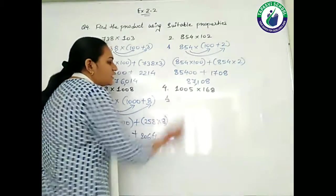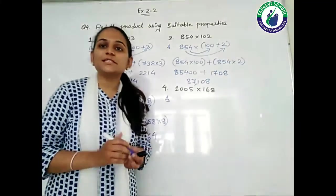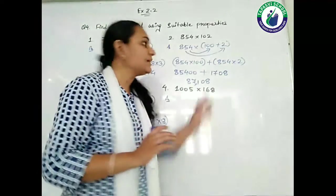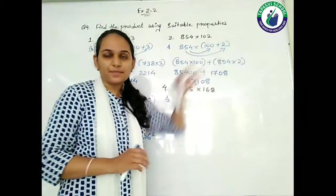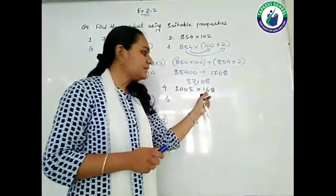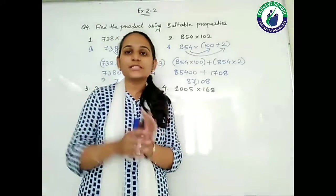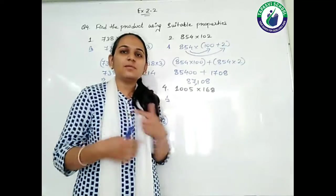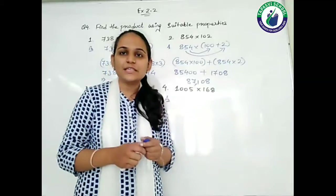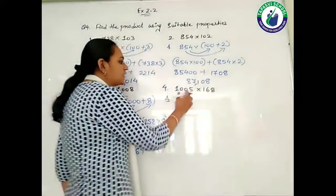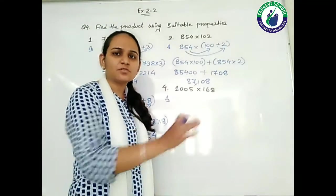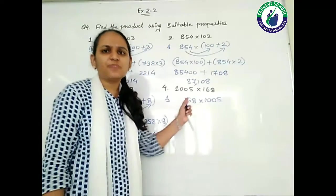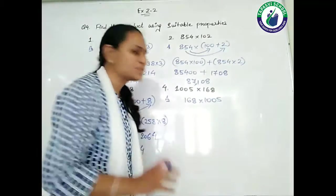Moving to the fourth question: the numbers are 1005 multiplied by 168. Can we write 1005 as 1000 plus 5? It is not necessary that this kind of operation can only be done with the second number — it can also be done on the first number. You could even split 168 as 100 plus 68 or 160 plus 8, but try to choose the numbers in such a way that your multiplication task is reduced. So here I am choosing to split 1005 as 1000 plus 5. You can also reverse the numbers — 168 multiplied by 1005 is also fine. What matters is that you know how to work.